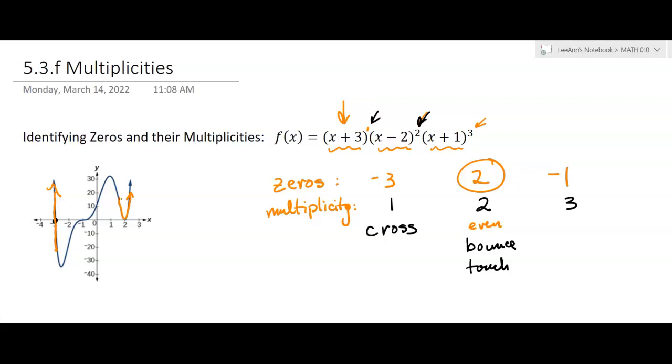But if the multiplicity is an odd number, bigger than 1, odd and not 1, greater than 1, then it's going to kind of flatten out a little bit, but it's going to cross. It just flattens out a little bit. And actually, the bigger the exponent, the more it flattens out. So cross, and I'll say flatten.